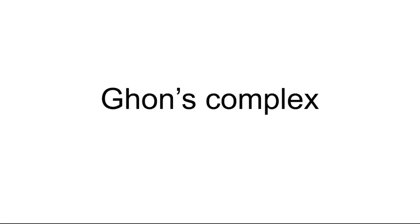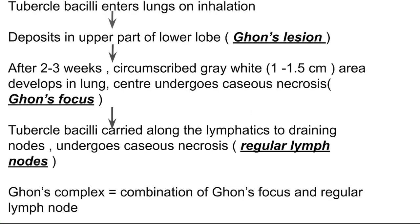In this video we'll study about Ghon's complex, which is seen in primary tuberculosis. This is the pathway of what exactly happens in the formation of this complex. When we inhale the tubercle bacilli, which is responsible for primary tuberculosis, it enters our lungs and is deposited at some site — it can be the upper part of the lower lobe or the lower part of the upper lobe.